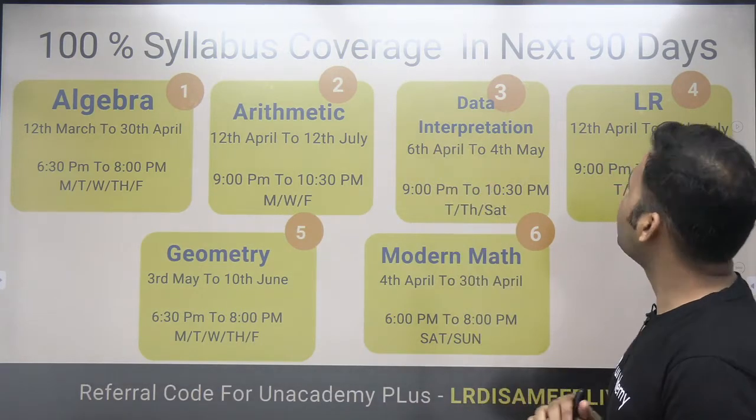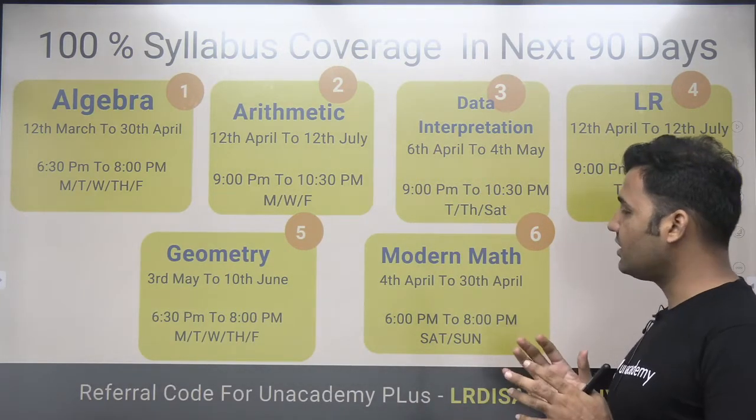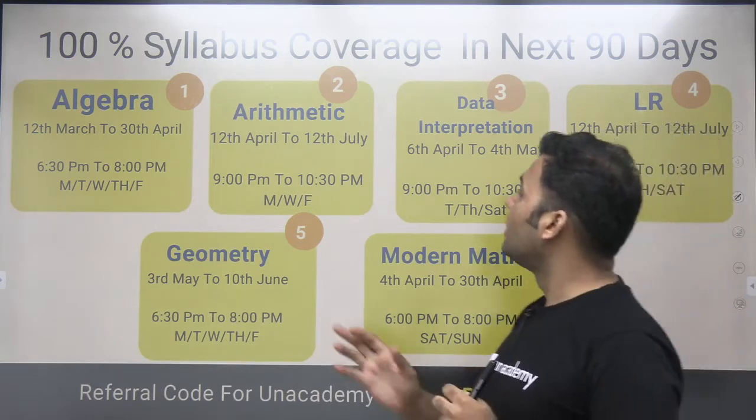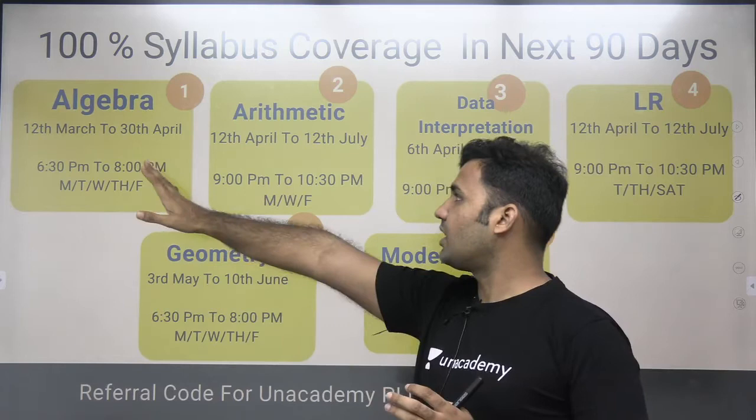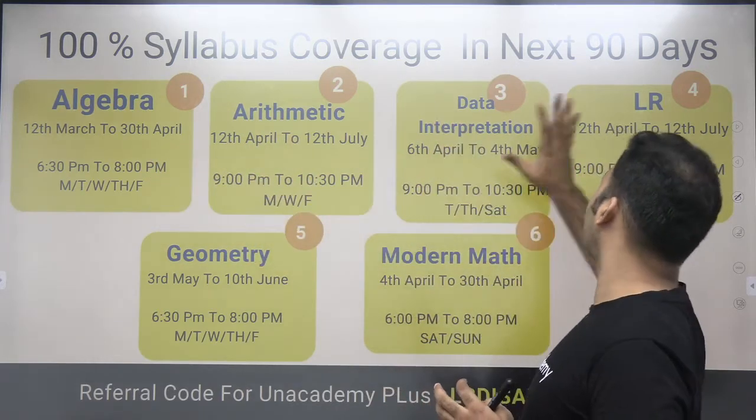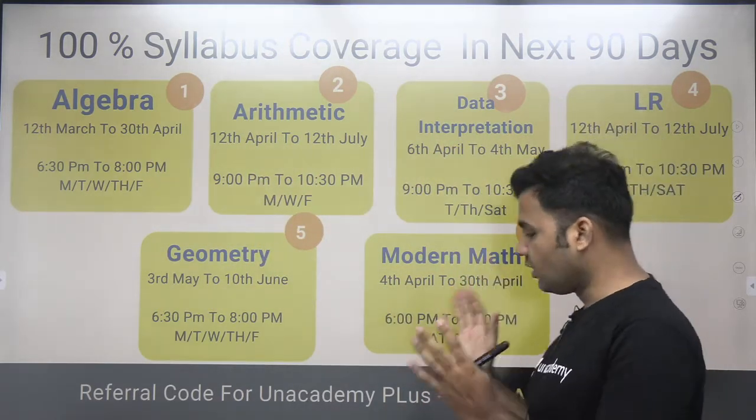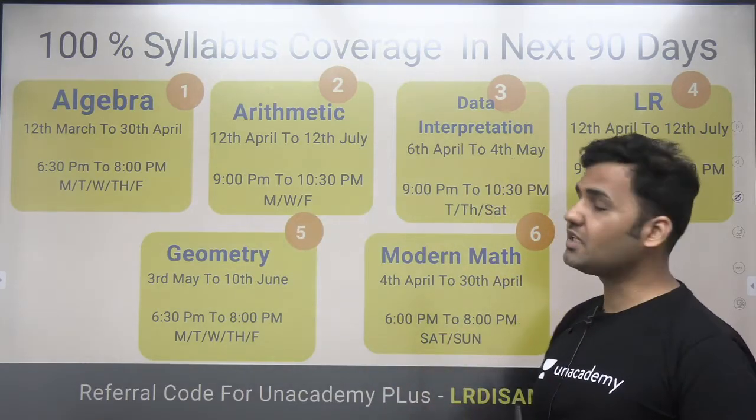You can cover 100% syllabus coverage in your next 90 days on Unacademy Plus. These are the courses I will be launching on Unacademy Plus. Algebra, Arithmetic, Data Interpretation, LR, Geometry and Modern Math. And these whole syllabus will be covered in the next 90 days.